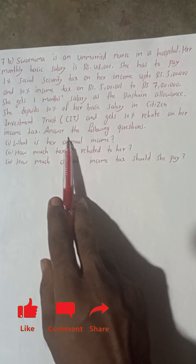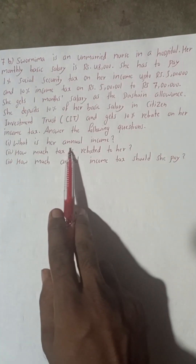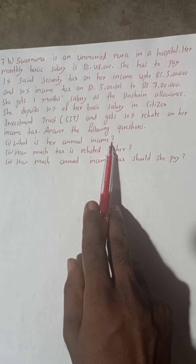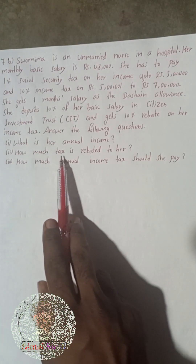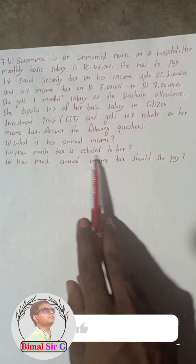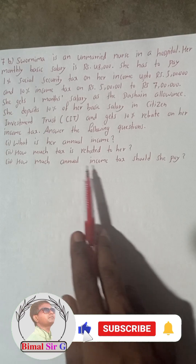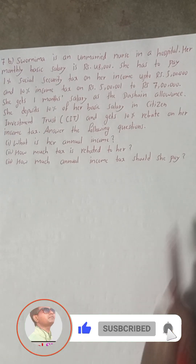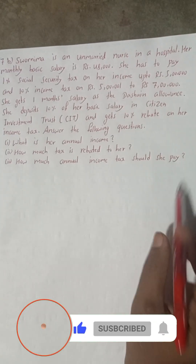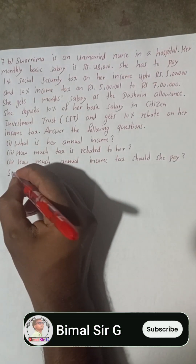She gets a 10% rebate on her income tax. The questions are: (1) What is her annual income? (2) How much tax is rebated to her? And (3) How much annual income tax should she pay? Let's start the solution.